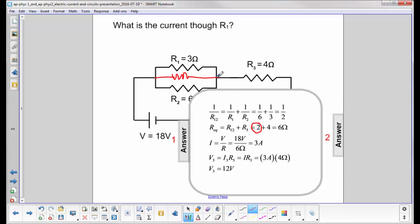We add 2 plus 4. We get 6 ohms. Current coming out of the battery is 3 amps.